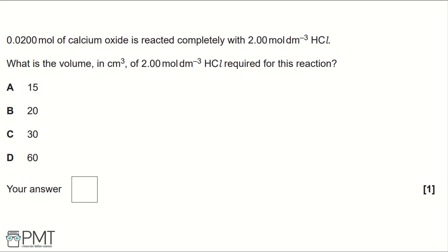First we need to write the reaction. Calcium oxide plus hydrochloric acid produces calcium chloride and water. This is one of your MASH equations: metal oxide plus acid makes a salt and water.